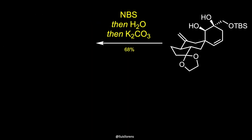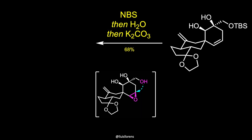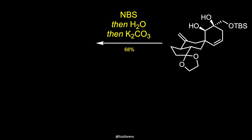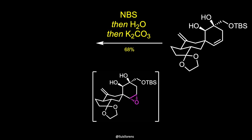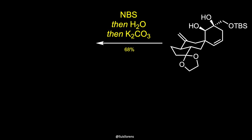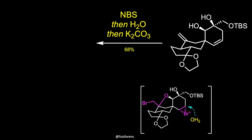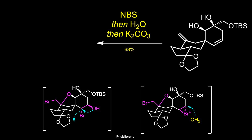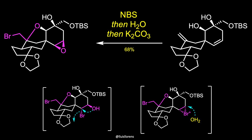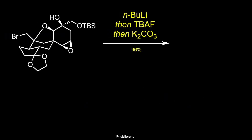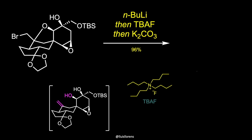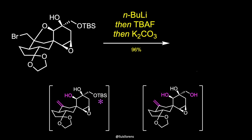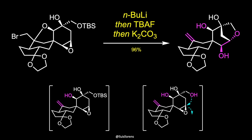In order to construct the strained oxabridge on the molecule, the authors aimed to place an epoxide that could be opened by a primary alcohol. The epoxidation reaction with DMDO or meta-chloroperoxybenzoic acid resulted in the formation of the epoxide on the undesired face of the molecule. The required orientation of the epoxide was only achieved employing more indirect methods through a bromohydrin intermediate. n-BuLi promoted the haloether ring opening, TBAF effected the silyl deprotection, and further addition of potassium carbonate resulted in the etherification reaction that led to the oxabridged core of the molecule.